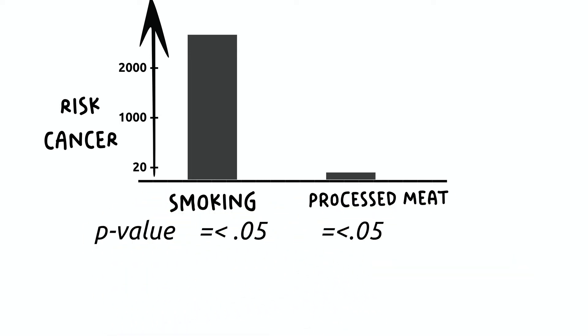However, smoking increased the chance of cancer 20 times compared to processed meat which only increased it 0.2 times, which is quite low compared to other risk factors.